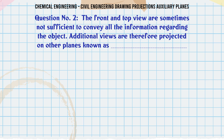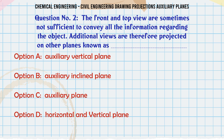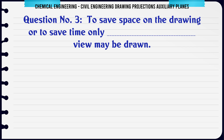The front and top view are sometimes not sufficient to convey all the information regarding the object. Additional views are therefore projected on other planes known as: A) Auxiliary Vertical Plane, B) Auxiliary Inclined Plane, C) Auxiliary Plane, D) Horizontal and Vertical Plane. The correct answer is Auxiliary Plane.